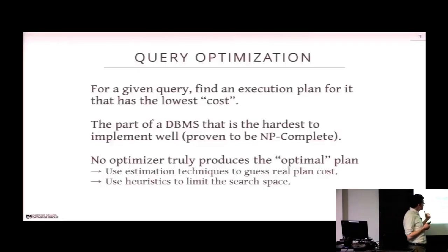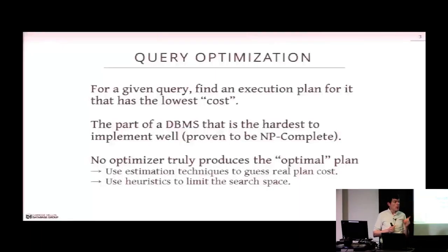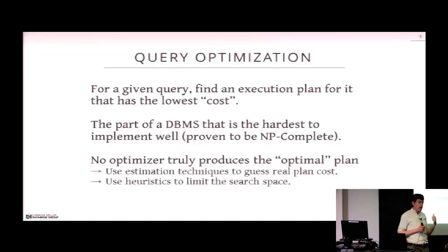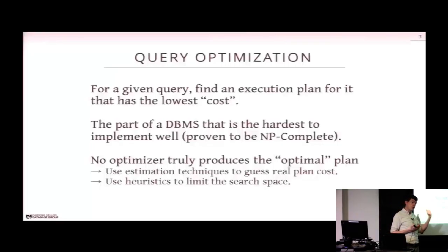The idea of cost is completely internal to the database system and not really useful to the outside world. The cost is not in terms of wall clock time — it's some internal number that allows the database system to compare one plan versus another. Doing query optimization in a database system is probably the hardest thing to implement well. You can come up with simple rules to approximate a good query plan, but for complex analytical workloads it's very hard, and it's been proven to be an NP-complete problem.